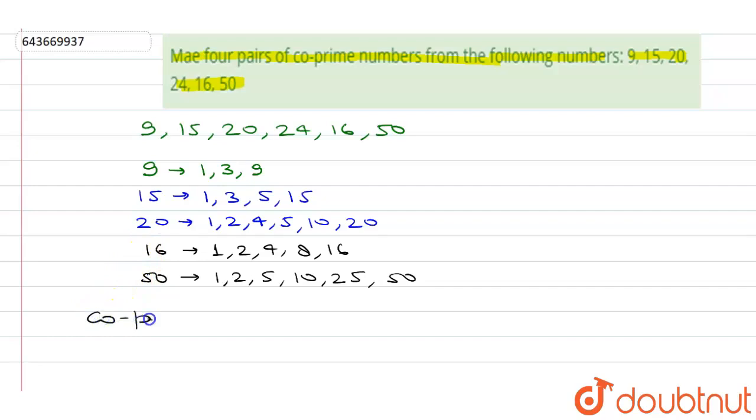Now, co-prime numbers are those numbers which have only one common factor, that is 1. If two numbers have only one common factor as 1, or the HCF of two numbers is 1, then those numbers are known as co-prime numbers.